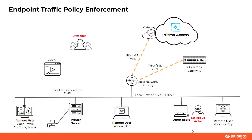Now let's review how the endpoint traffic policy enforcement feature will help our customers with their zero trust network access vision via the simulation topology. Remote users will have secure IPsec or SSL connection to Prisma Access or on-prem gateway. An attacker can try to have an incoming connection to remote network endpoints which are secured via GlobalProtect. With GlobalProtect traffic policy enforcement, admins will be able to terminate such connections.